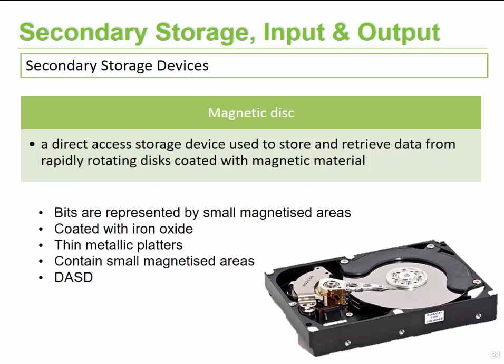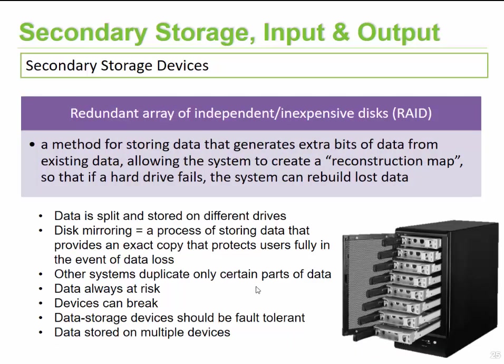The next type is a direct access storage device, which allows you to immediately retrieve your information. This is typically in the form of hard disks — rotating disks that are magnetized, where changing areas on the disk to ones and zeros, either magnetized or not magnetized, represents your information. They're usually coated with iron oxide and contain thin metallic platters, which are cylindrical disks where small magnetized areas are written.